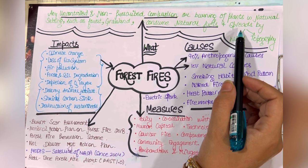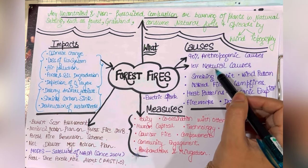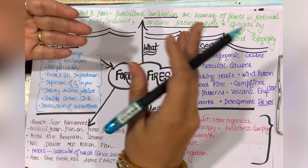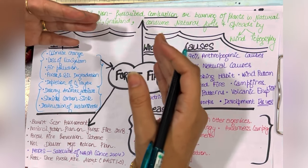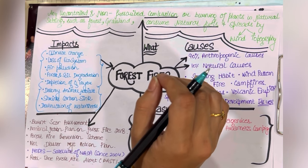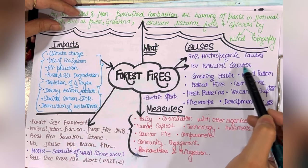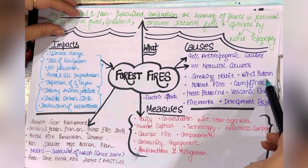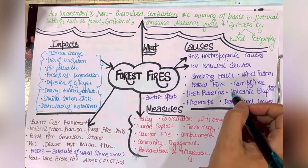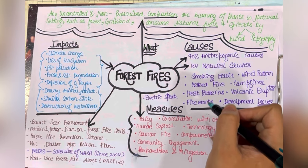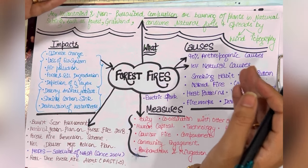Now in India there is a savanna type of climate. Causes can be anthropogenic or natural. There can be dry environment conditions, and it can cause a spark. Causes include smoking habits, naked fire left unattended, fire camps, electric sparks, heat patterns such as heat waves, and the missing of the spring season in India.